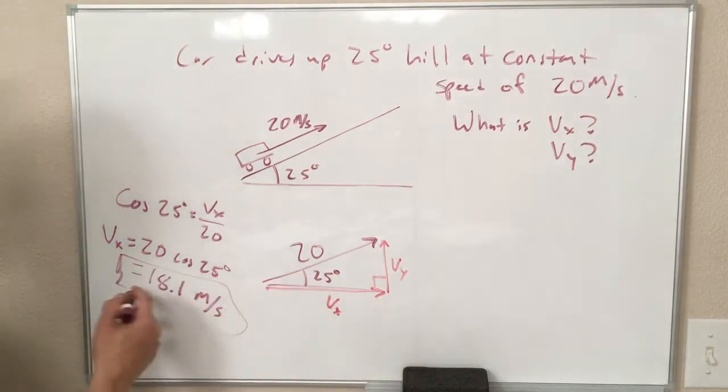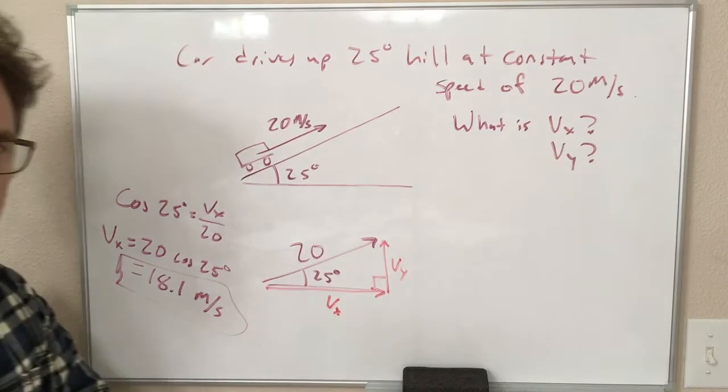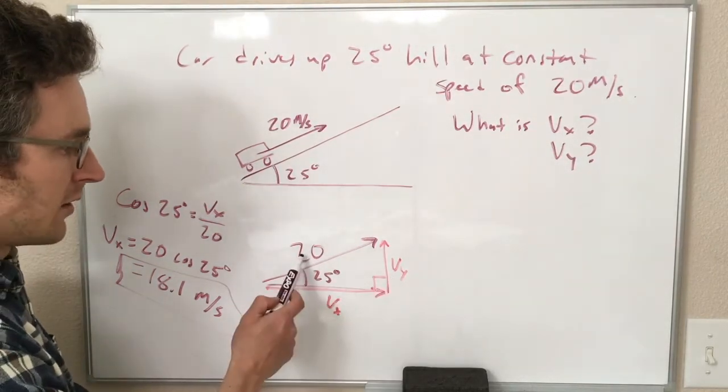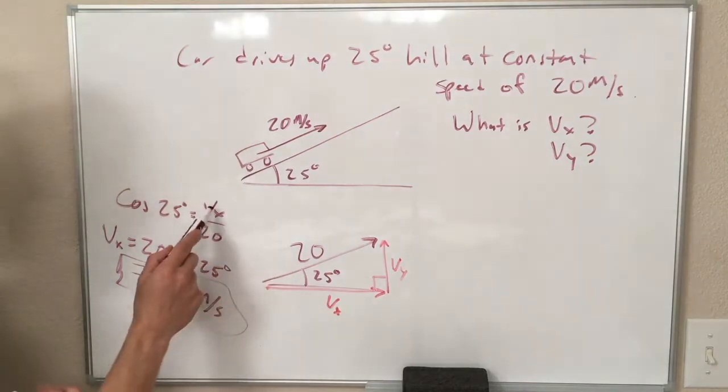For Vy, if this was the cosine, that will probably be the sine, but we can check. Sine of 25 is opposite over hypotenuse. So the sine is Vy over 20,